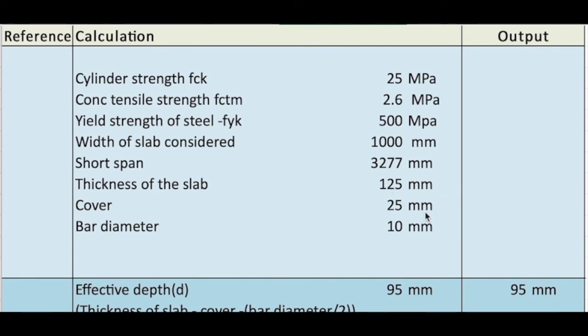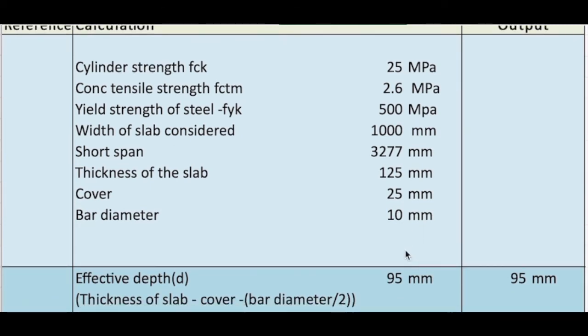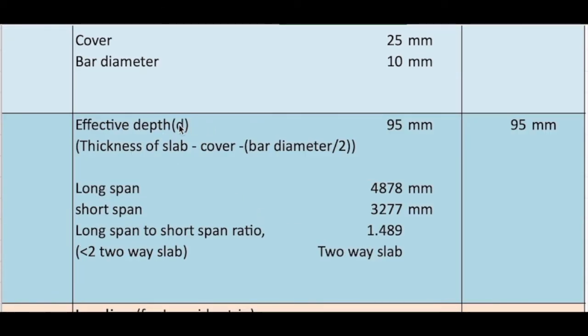Cover we found earlier 25 mm, bar diameter assumed 10 mm. The first important thing is effective depth, which we're going to use till the end. So the effective depth is equal to thickness of the slab, deduct the cover minus bar diameter by 2.